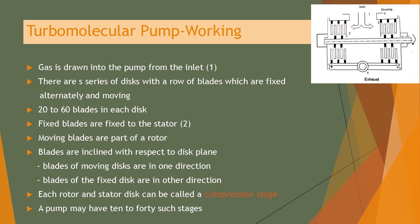The gas is drawn into the pump from the inlet, represented as one in the figure. There are a series of discs with rows of blades fixed alternately, with 20 to 60 blades in each disc. Fixed blades are attached to the stator, while moving blades are part of the rotor. The blades are inclined with respect to the disc plane, with moving disc blades oriented in one direction and fixed disc blades in another.